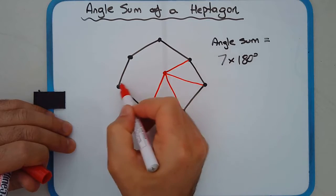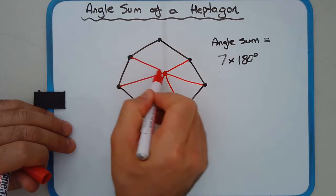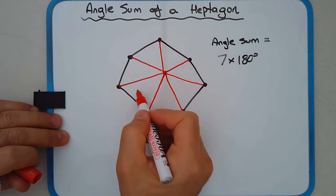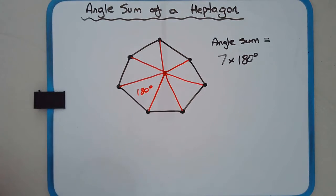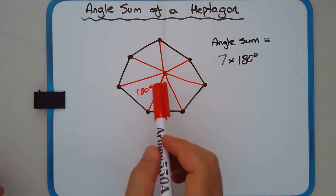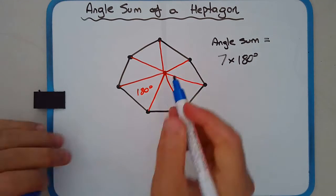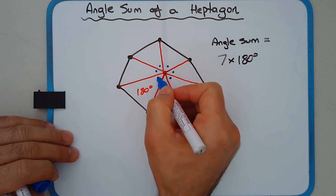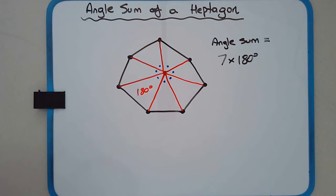It's because we can break this shape up into seven triangles. Each one of these triangles has an angle sum of 180 degrees, and we have seven of these triangles. But remember, the angles in the center, these ones here in blue, they don't count. So they need to be subtracted out.